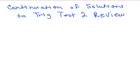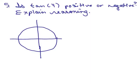This is a continuation of solutions to the trig test 2 review. Number 5 is the tangent of 4, positive or negative.